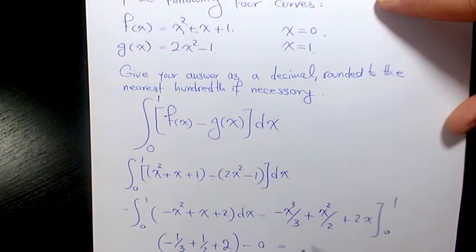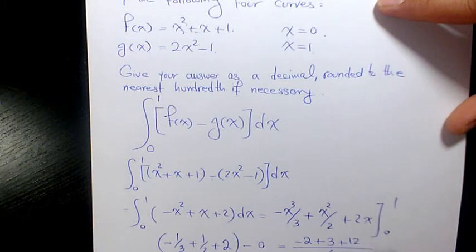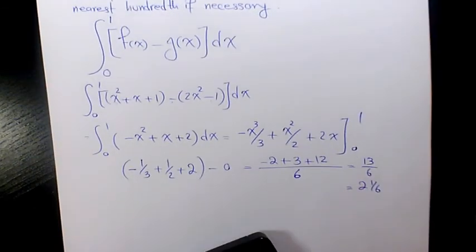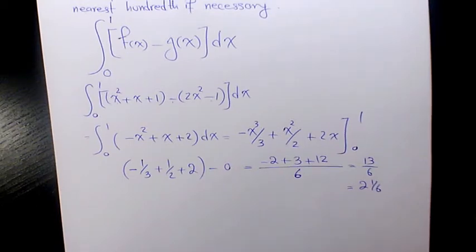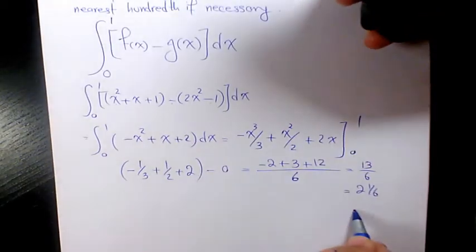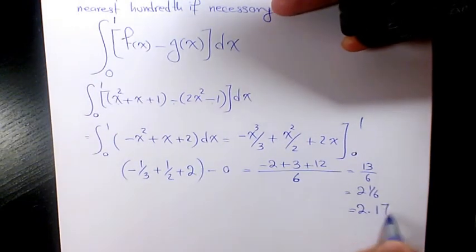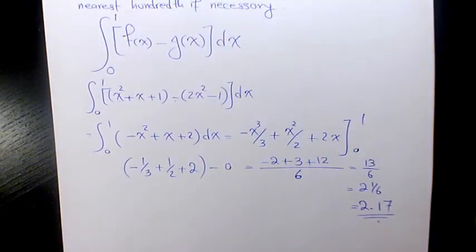So then it's going to be with common factor negative 2 plus 3 plus 12, which is 13 over 6, or 2 and 1 over 6 if you show it in fractions. If you want to keep it in terms of decimals, that's going to be 13 divided by 6, which will be 2.17. That's the final answer. Please leave me a comment if you have any question.